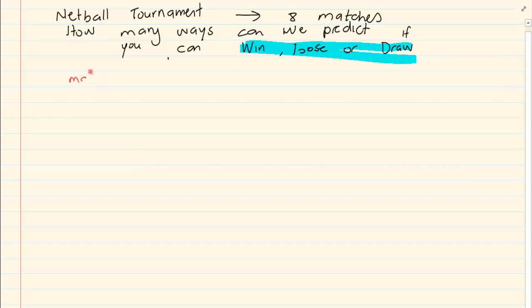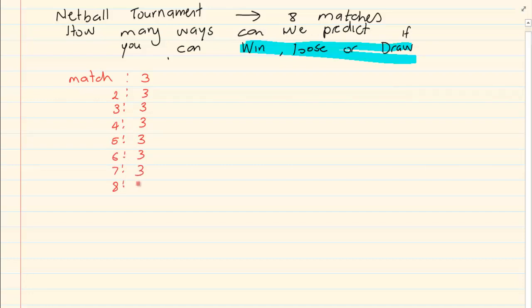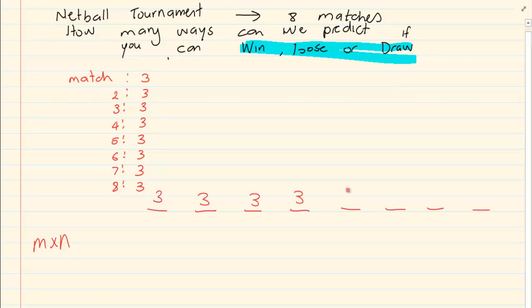For the first match there are 3 options, for the second there are 3 options, for the third there are 3 options — and this continues for all 8 matches, each with 3 options. So what we are doing is still using the rule where we had m times n, and we can see it is going to be 3 times 3 times 3 times 3, repeated for all 8 matches.